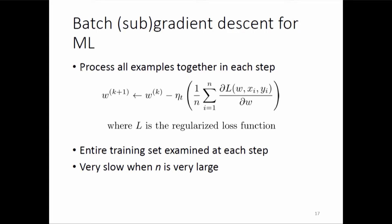Sub-gradients have all the properties that gradients have — for example, the sub-gradient of a sum of functions is the sum of sub-gradients — except that they are not unique. Now, for some applications gradient descent is very bad. Why? Because n is very large — your training set is very large.